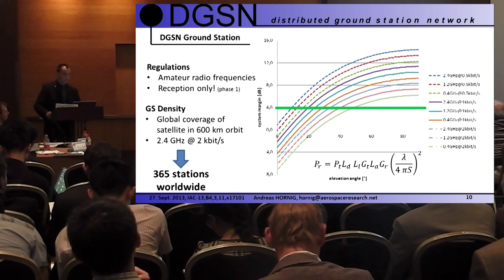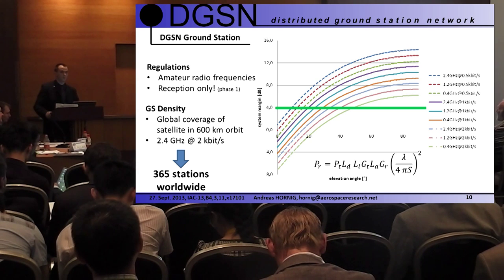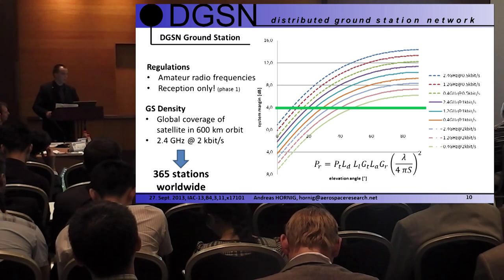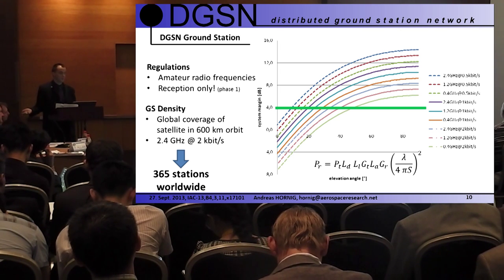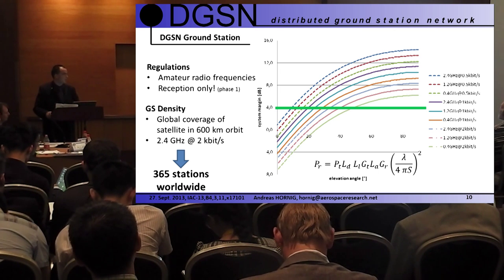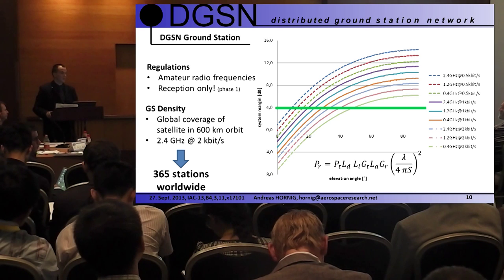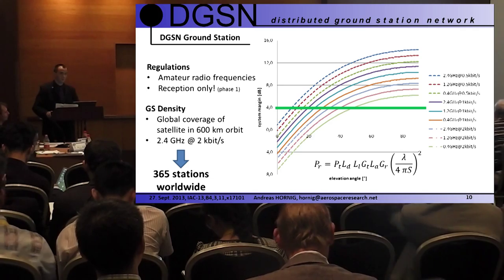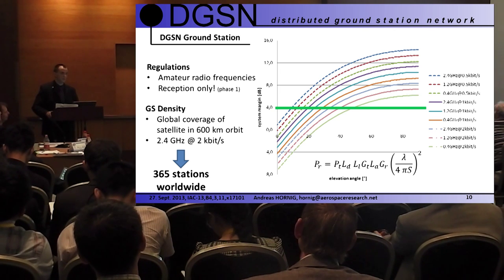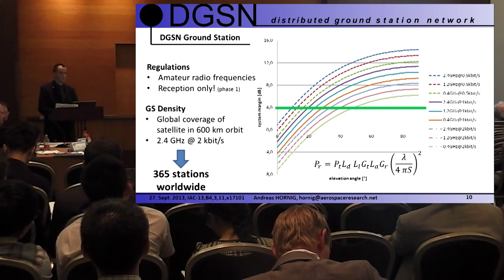We conducted a system margin over elevation study with different frequencies in amateur radio bands, and data rates ranging from 0.5 to 2 kilobits per second, across 2.4 to 0.4 GHz. We took 2.5 GHz with 2 kbps, which requires 365 stations worldwide — there is a lot of ocean, so we keep them on the ground. If you estimate 200 USD per unit that's a lot of money, but projects like the air quality sensor network and Blitz Ortung — a lightning detection service with more than 1000 active users building their own sensors — show this is feasible with citizen science communities.